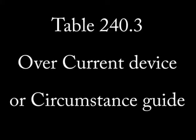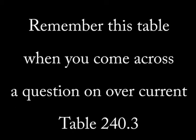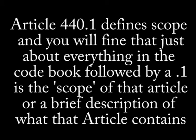This takes us to table 240.3, which is the master reference on where to locate overcurrent codes and tables for various circumstances and devices. Let's give you some examples and start with air conditioning equipment, listed as article 440 in table 240.3. In the book, you'll see that 440.1 defines the limits of the article. You will find this to be true in almost every article, so get used to it.